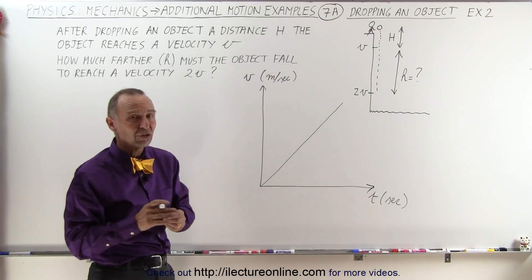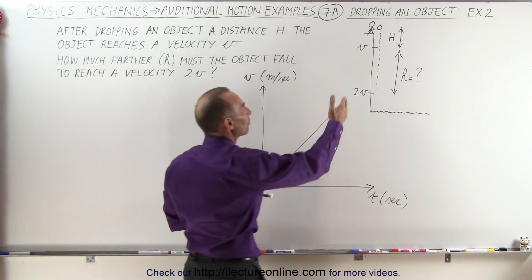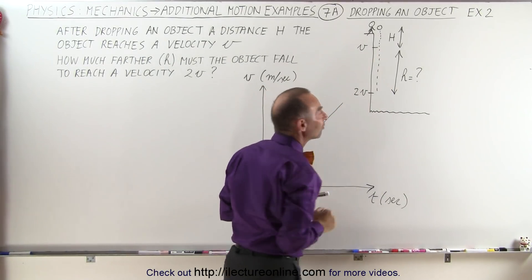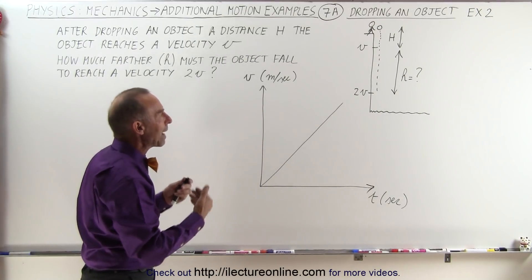Now to make things a little bit simpler, let's just call everything a positive quantity. We're simply going to call velocity positive because we want the magnitude of the velocity. We're going to call the distance or displacement positive because again we just want to deal with the magnitudes.